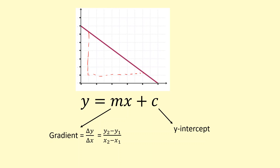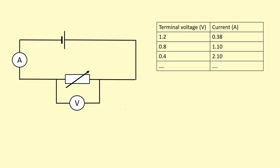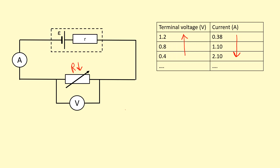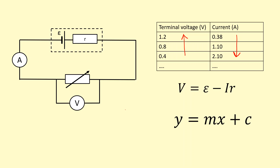Here I have a circuit. I'm going to decrease the load resistance — as a result, the current goes up. The terminal voltage actually decreases because of the internal resistance: when the current goes up, there is more lost pd, so the terminal voltage decreases. I want to use this data and compare the equation to the equation of a line, because the gradient and intercept will be most useful. So I'm going to rewrite this equation in a slightly more useful way.